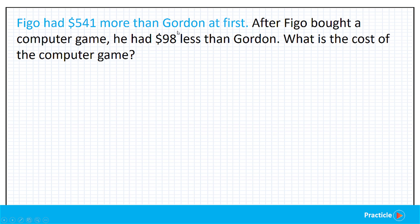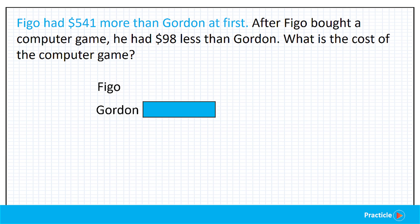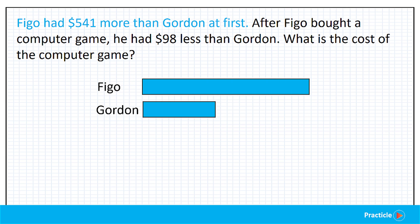Two people — Figo and Gordon. We don't know how much money each of them had, but we know that Figo started off having more money than Gordon. We are going to draw two rectangular boxes to represent the amount of money that Figo and Gordon had. Because Figo had more money, his rectangular box must be longer than Gordon's. And the difference is $541 — so this part has to be $541. Great, looks like we are done with the first part.